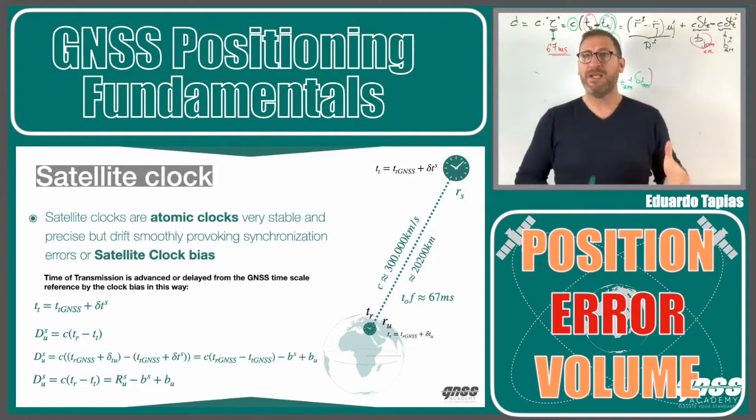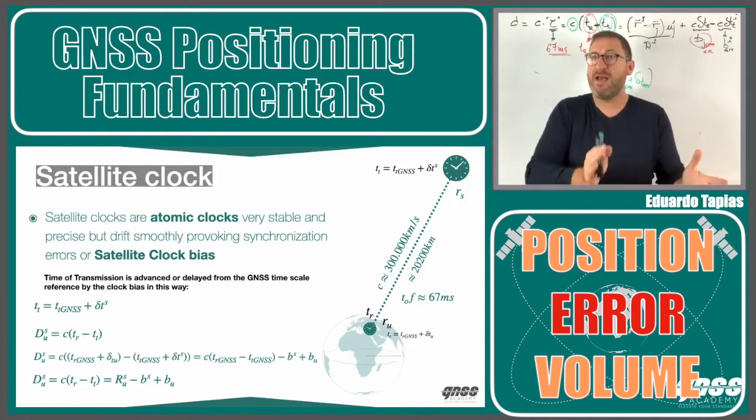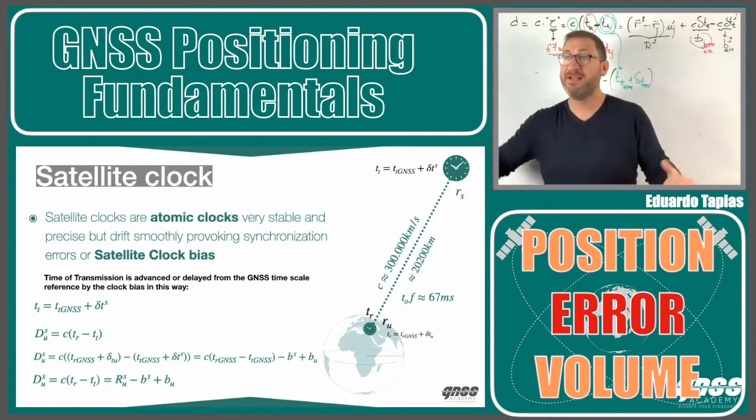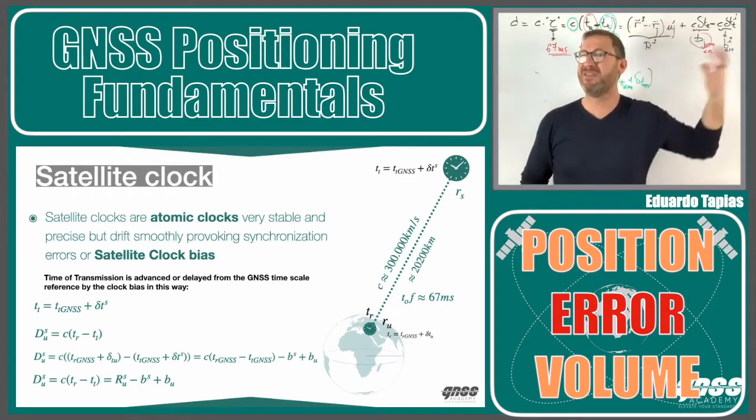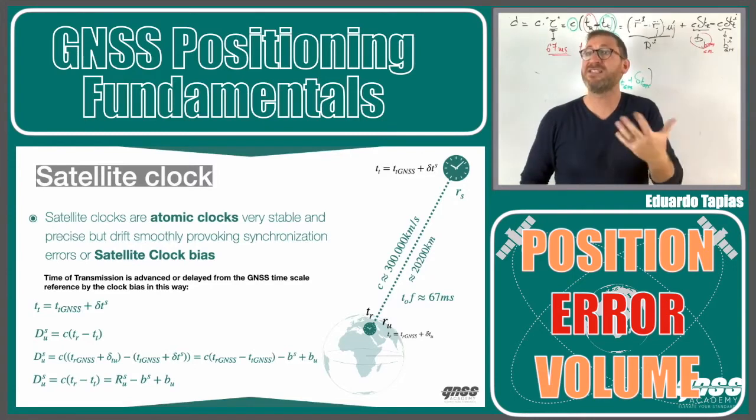Then if we add more equations, we have more unknowns, because each equation I have, I have more clocks to estimate. Then somehow someone has to give me this value. Somehow I cannot estimate it.